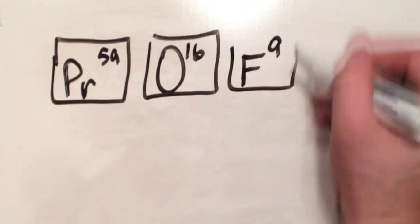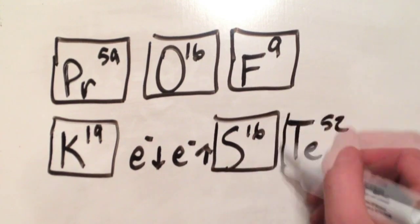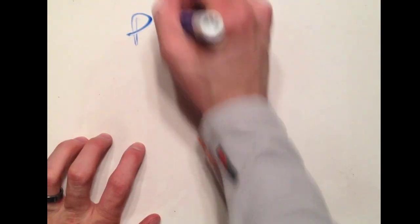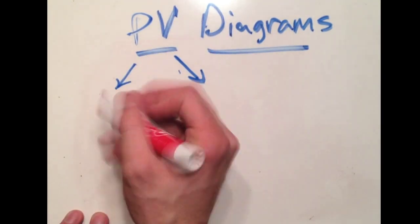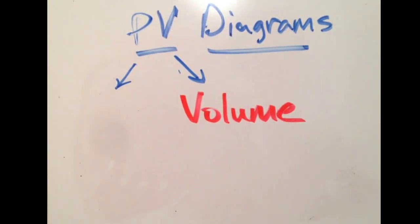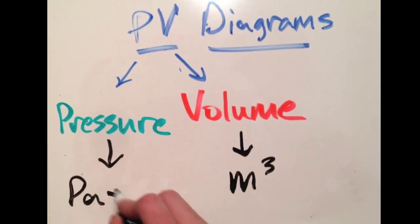In this video tutorial, we will be dealing with a very common physics C problem, the pressure volume diagram. A pressure volume diagram is just that. It is a graph of pressure versus volume. Your volume should be in the units of cubic meters, whereas your pressure should be in units of Pascals.